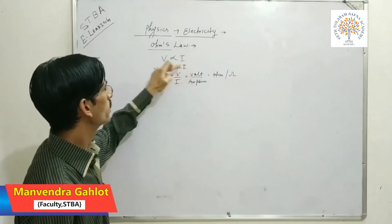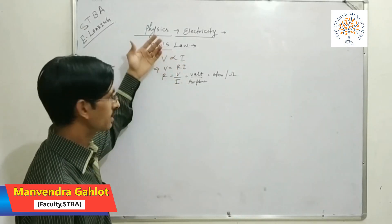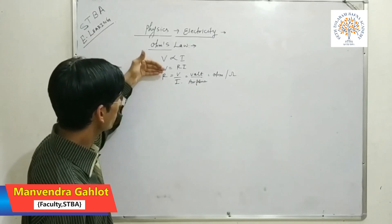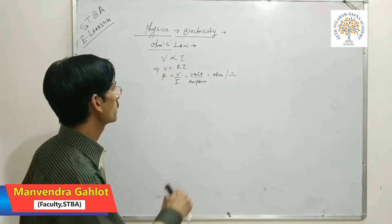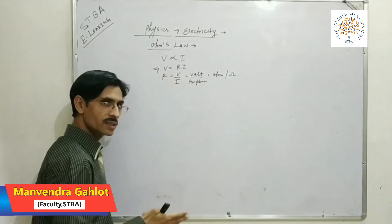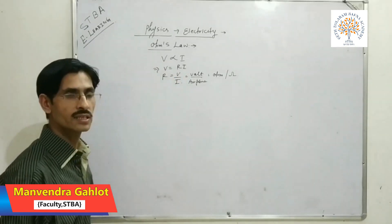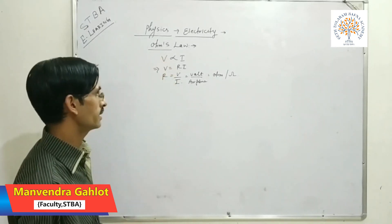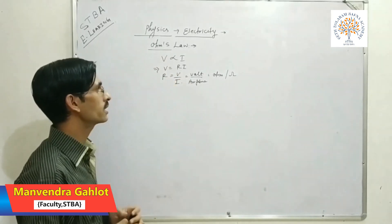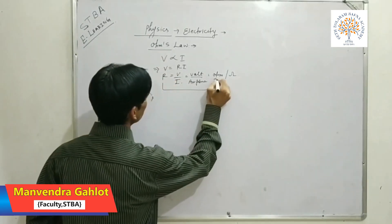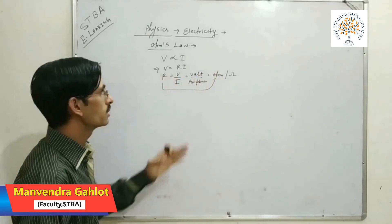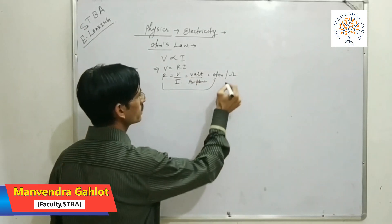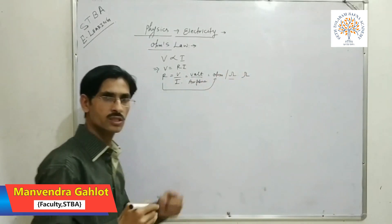V is directly proportional to I. Removing the proportionality sign, we introduce a constant: V equals R times I. Then R equals V upon I, where V is potential difference and I is amount of current, and their ratio remains constant. The unit of resistance is volt upon ampere, which is Ohm. You can also write the symbol for Ohm as omega (Ω).